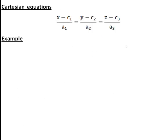The third way in which we can represent the equation of a straight line is with its Cartesian equations, where x, y, and z are the coordinates of any general point on the line, c1, c2, c3 are the coordinates of a specific point, and a1, a2, a3 are the components of the vector in the direction of the line.